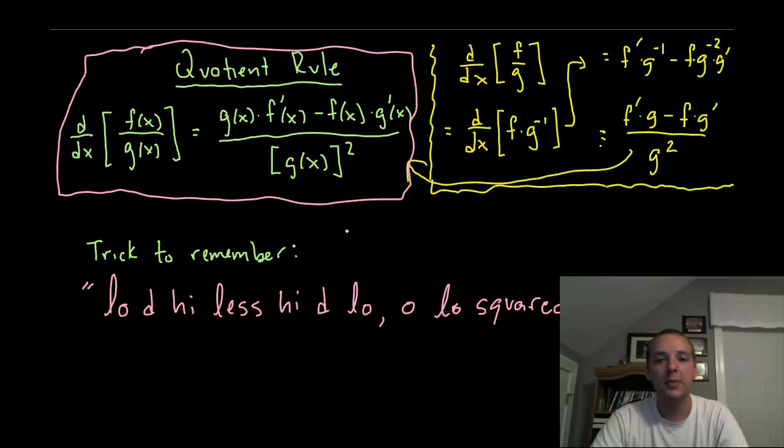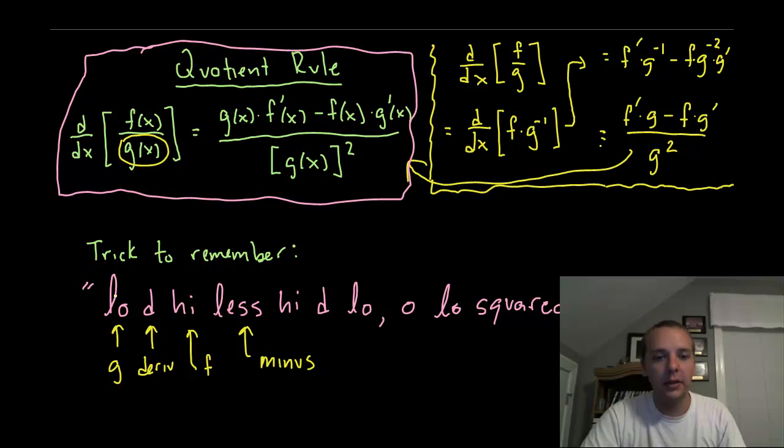What does that mean exactly? When you say low, I'm literally talking about this position, the denominator, the g function. When I say d, I mean derivative. When I say high, I'm referring to F. Less means minus. Let's read this slowly: low d high, that's low d high.